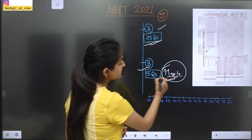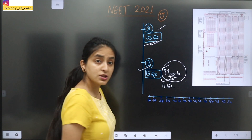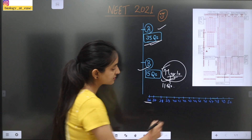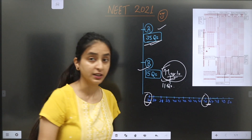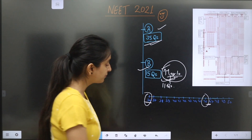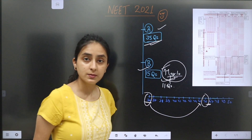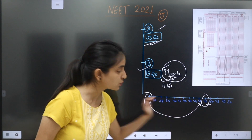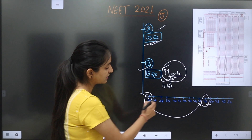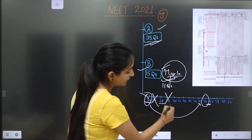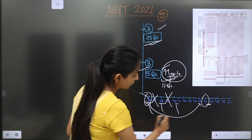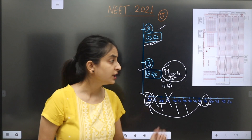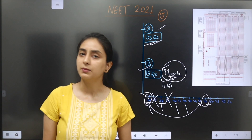Now, suppose someone marks 11 questions in Section B without counting carefully. For example, if they attempt questions 36 to 46, only the first 10 questions will count — questions 36 through 45. Whatever questions you are attempting, only the first 10 will count. So don't mark more than 10 questions; the extra ones will not count.